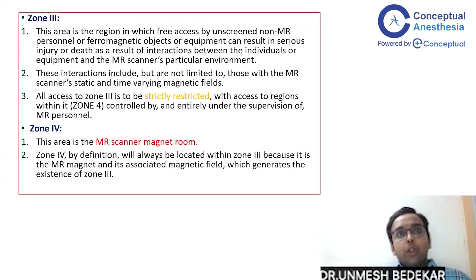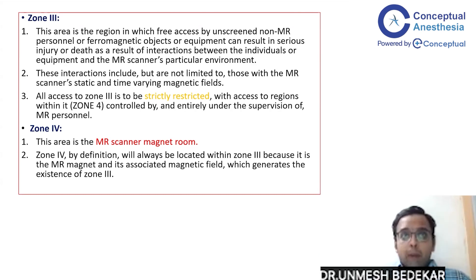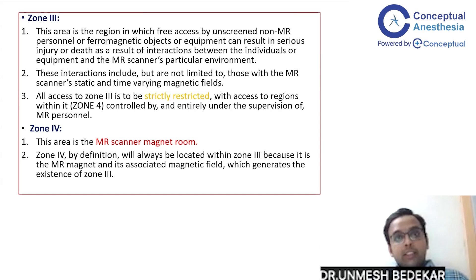Zone 3 is the region where free access by unscreened non-MR personnel or ferromagnetic substances can result in serious injury and even death due to interactions with the MR scanner's static and time-varying magnetic fields. This zone is strictly restricted and entirely supervised by MR personnel. Zone 4 is the main MR scanner magnet room, which is always located within Zone 3, because it is the MR magnet itself and its associated magnetic field that generates the existence of Zone 3.